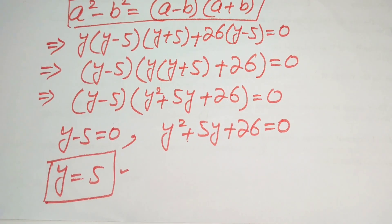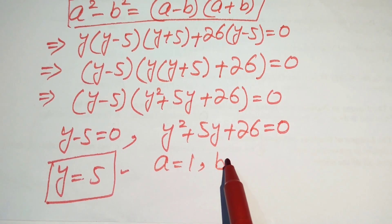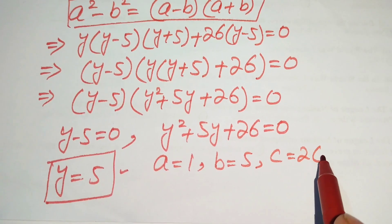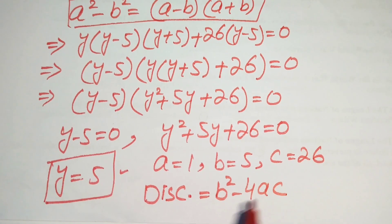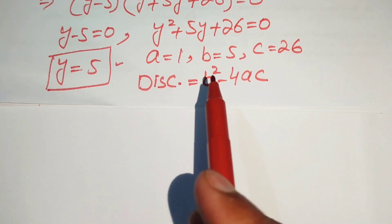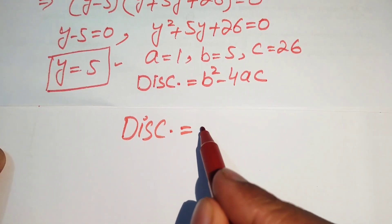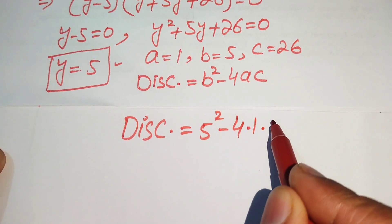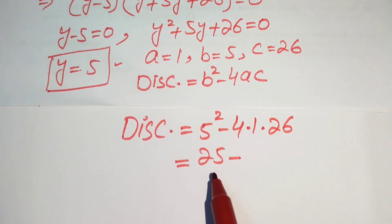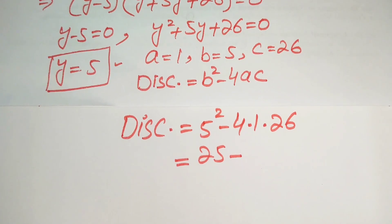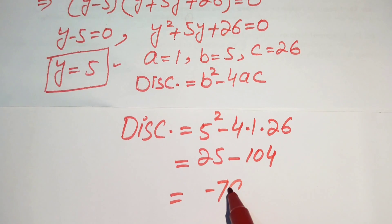The coefficients are a equals 1, b equals 5, and c equals 26. The discriminant formula is b squared minus 4ac. Substituting, we get 5 squared minus 4 times 1 times 26, which equals 25 minus 104.